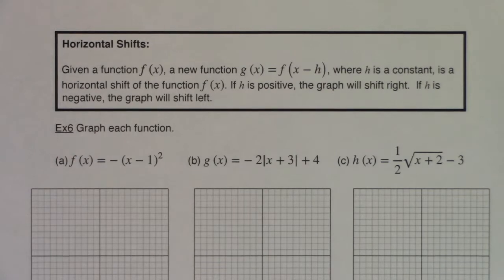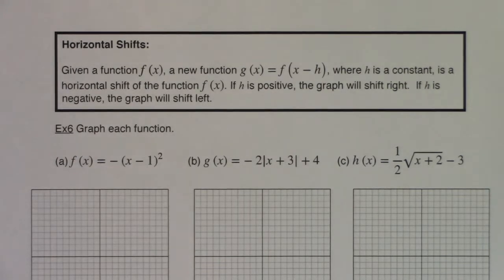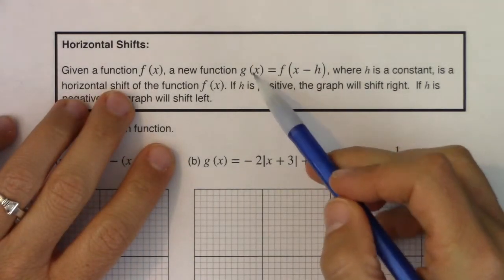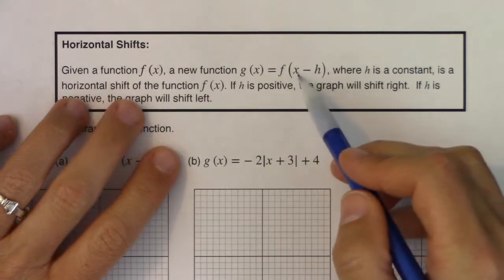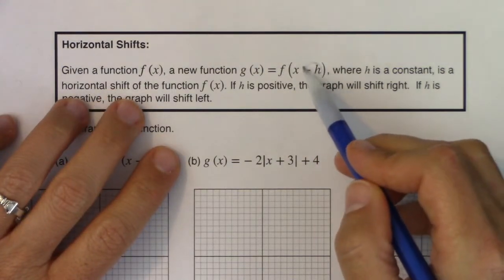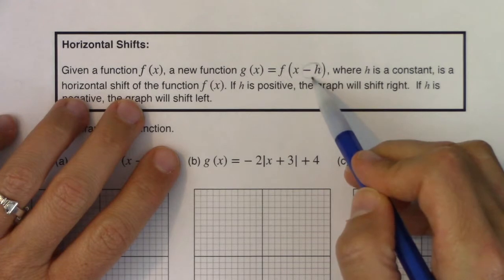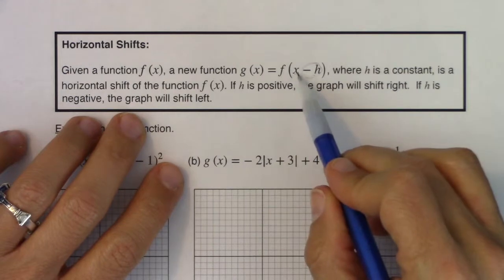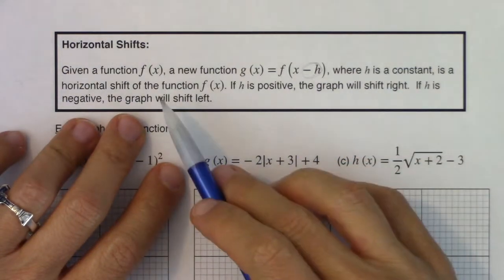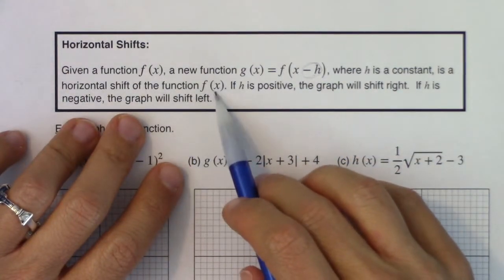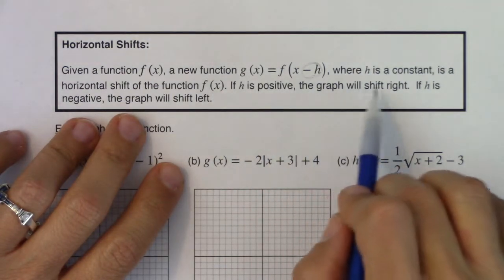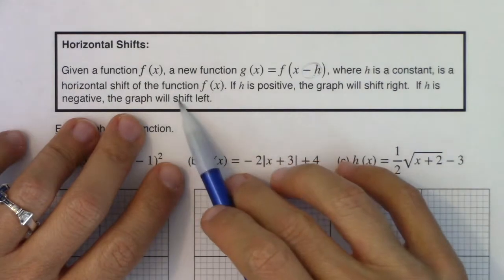Hey Mount 31, we've made it to the last type of transformation: horizontal shifts. So if I have a function f of x, I can define a new function g of x to be f of x minus h. We are subtracting a constant inside the grouping symbols, inside the parentheses. So f of x minus h, where h is a constant, is a horizontal shift of f of x. If h is positive, the graph will shift right. If h is negative, the graph will shift left.